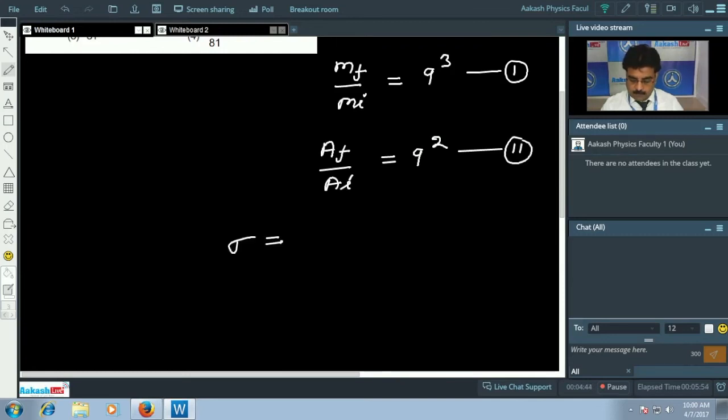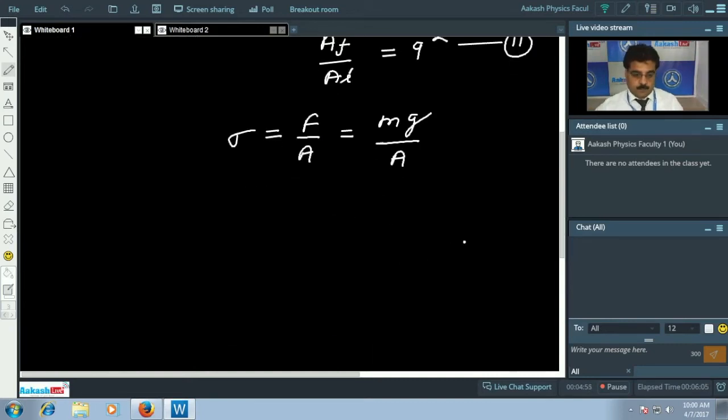But we want to calculate stress, and we know that stress is given by force upon area, or mass into acceleration due to gravity by area. So if I represent final stress by sigma f and initial stress by sigma i, this is the ratio between final stress to the initial stress. We can write final mass to the initial mass, multiplied with initial area to final area.